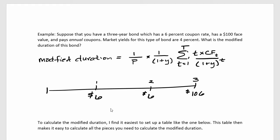In this video we're going to calculate the modified duration of a bond. As a reminder, the modified duration of a bond is a measure of the sensitivity of that bond to changes in interest rates, so it's a measure of exposure to interest rate risk for a particular bond.